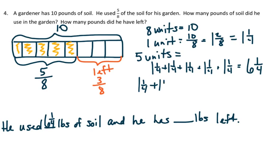That would be 1 and 1 fourth, plus 1 and 1 fourth, plus 1 and 1 fourth, which is equal to 3 and 3 fourths. That's what he has left. I'll put that in my target sentence, and now my answer reads, he used 6 and 1 fourths pounds of soil, and he has 3 and 3 fourths pounds left.